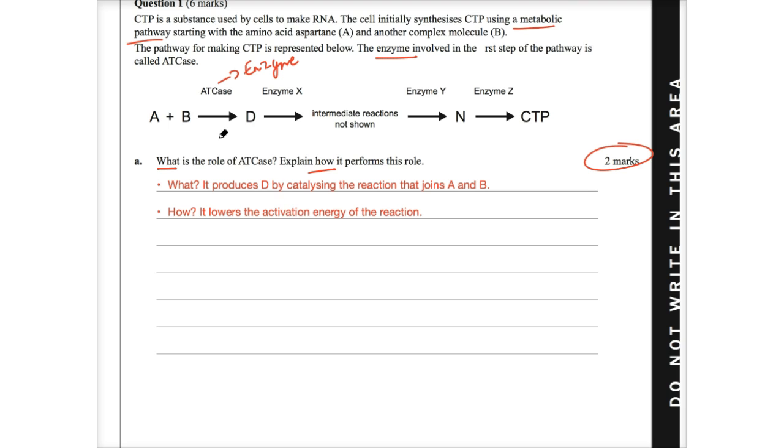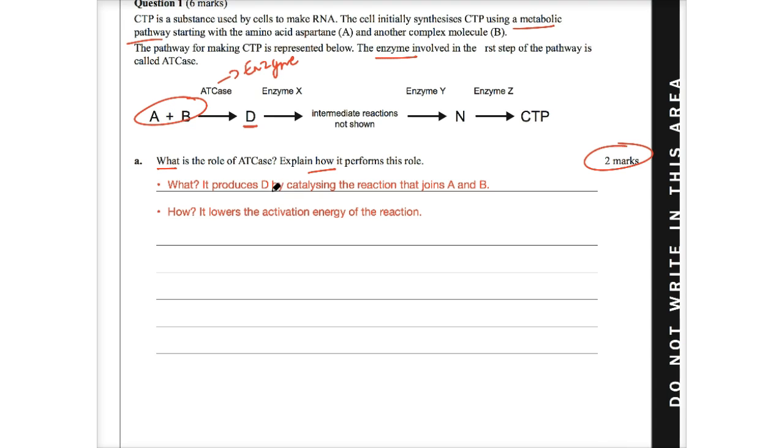So when you look at this, what does it do? A and B join together and it produces D. We know enzymes are biological catalysts. They lower the activation energy, thereby increasing the rate of reaction. And so what it actually does, it helps produce D by catalyzing the reaction that joins A and B. That's exactly what it does. How does it do that? It lowers the activation energy. And so therefore, if you look at my answer, there are only two key dot points. One dot point addressing the what, and I obviously will repeat this, but it says it produces D by catalyzing the reaction that joins A and B, those two substrates to produce the product of D. How does it do it? It simply lowers the activation energy of the reaction.